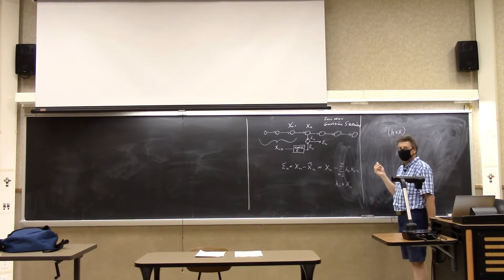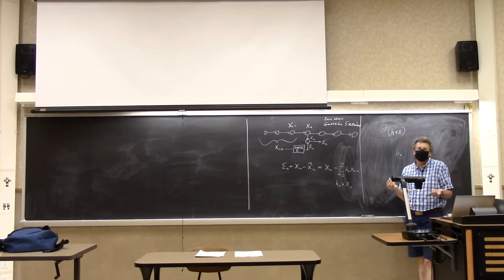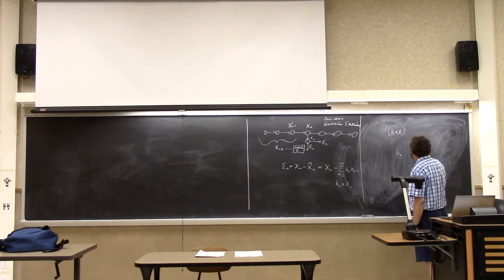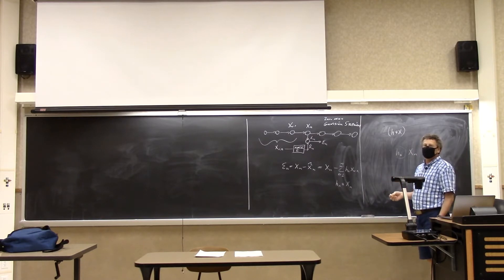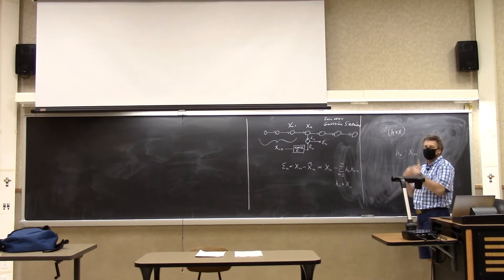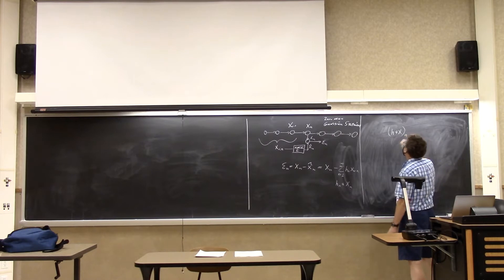So ε_n equals x_n minus the sum from k=1 to infinity of h_k times x_{n-k}. This looks like convolution — h convolved with x. And this is because it's stationary, so it has to be a convolution. If it wasn't stationary, it would be a time-varying impulse response.